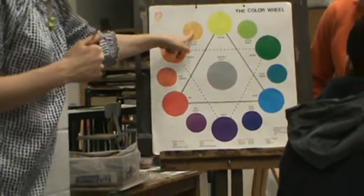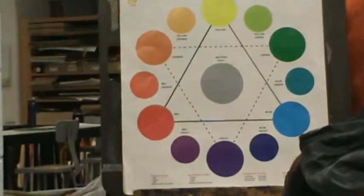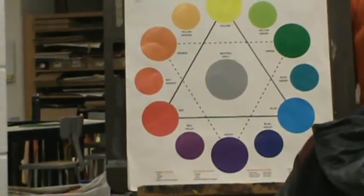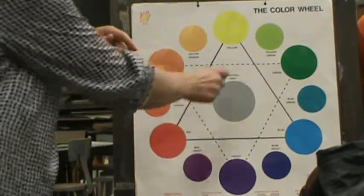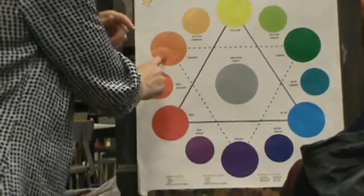These tertiary colors are analogous colors because they're neighboring, but when we're mixing a scale, we always mix a primary color with a secondary color.